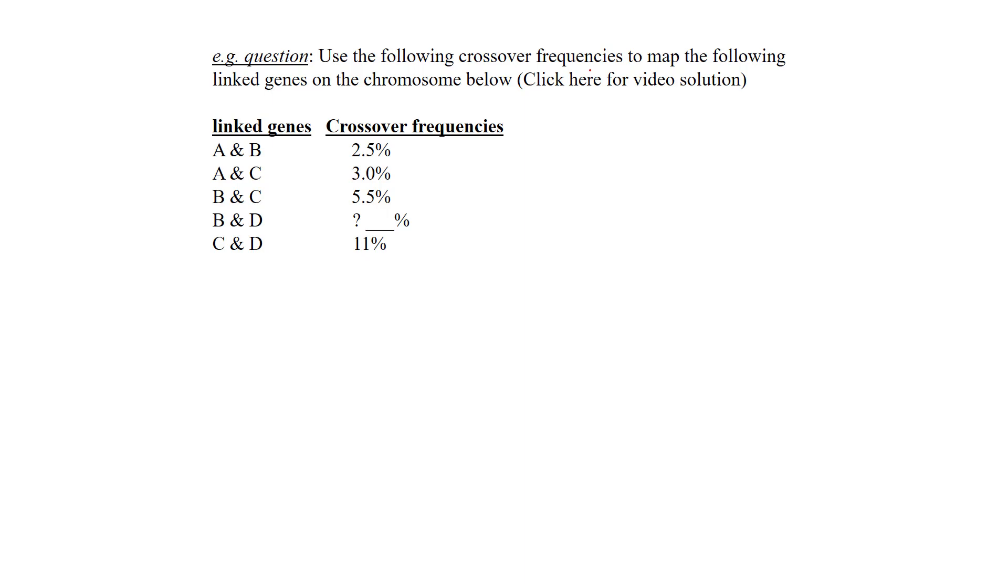It says use the following crossover frequencies to map the following linked genes on the chromosome below. They give you just a bunch of genes and what percentage of crossover frequency exists between them.